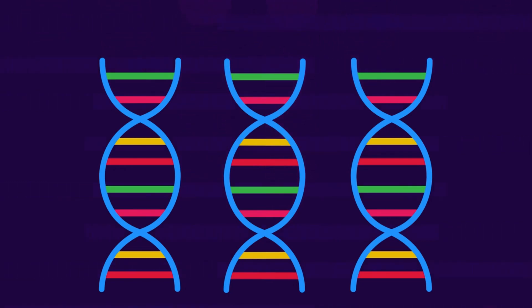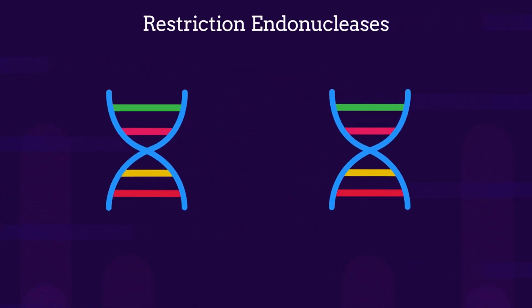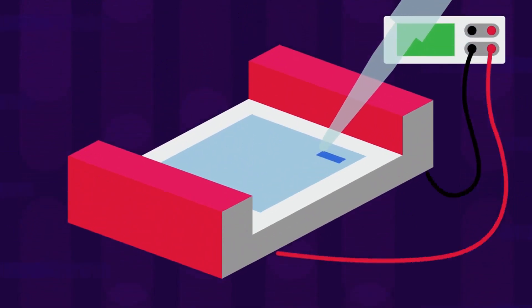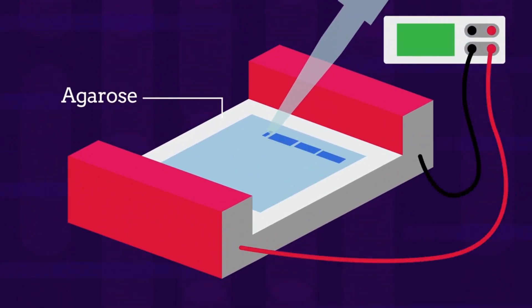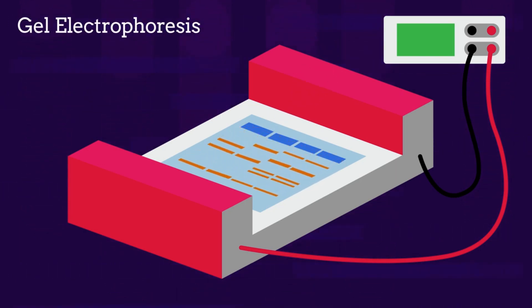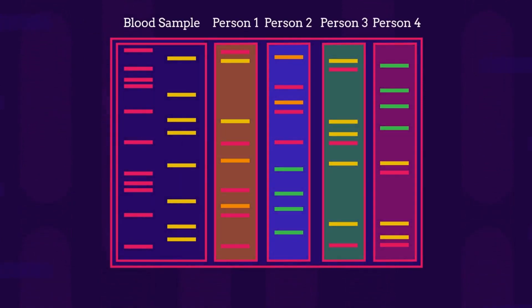Special enzymes called restriction endonucleases are used to cut the DNA up into different size pieces. The DNA samples are then put into wells in a special gel called agarose for the process of gel electrophoresis, which separates the DNA fragments by size. The pattern is then transferred to a nylon sheet in southern blotting. And finally, the lines produced by the DNA samples from different people are compared.